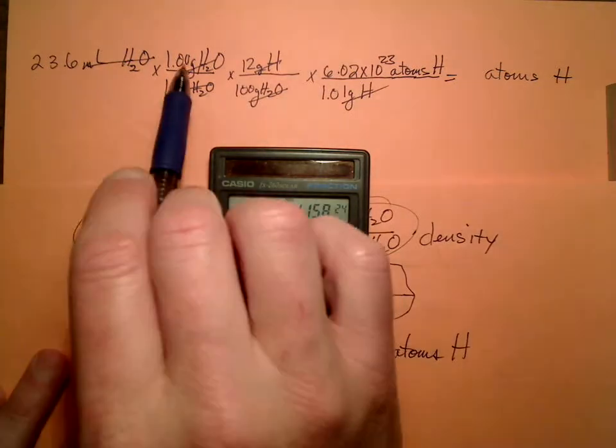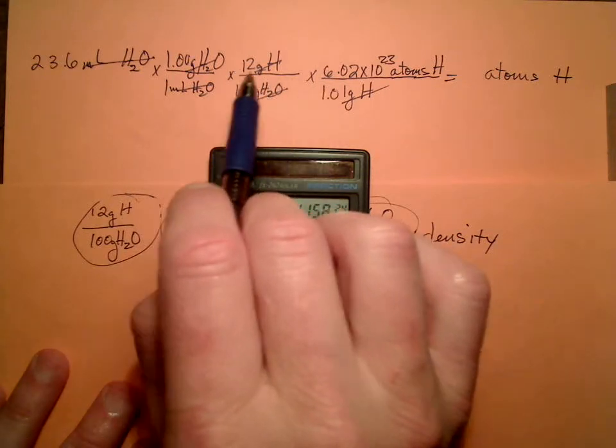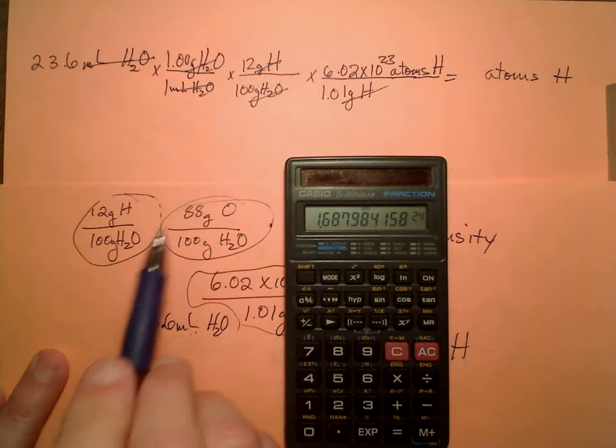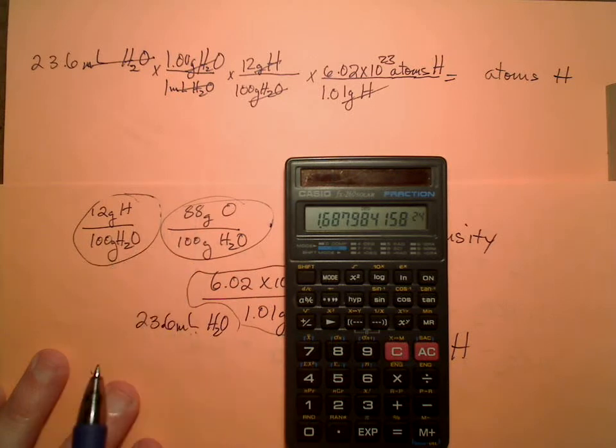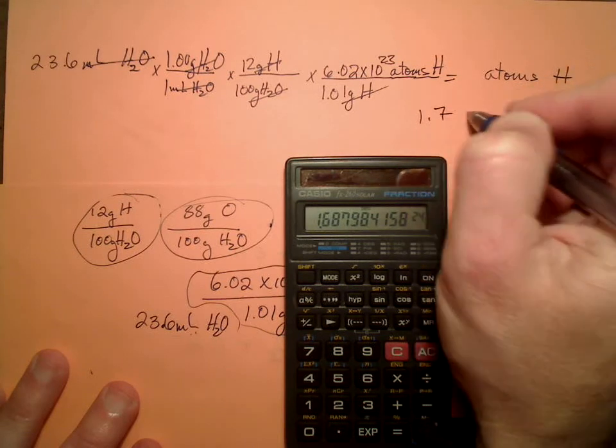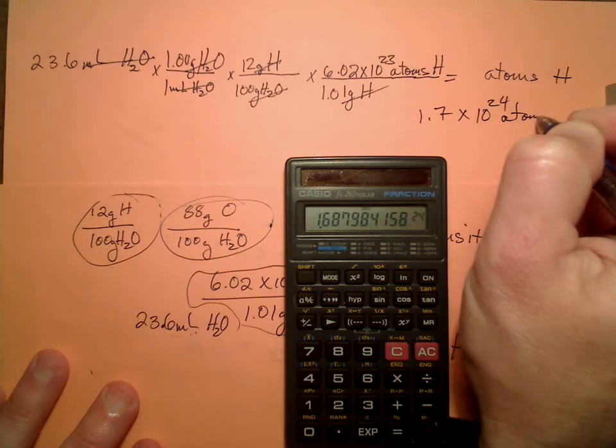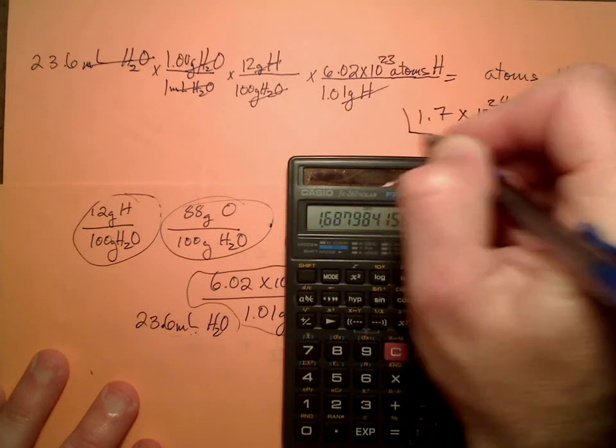Looks like I'm good to two significant figures because that percentage here is a measured value. So that's going to be 1.7 times 10 to the 24th atoms of H. Bingo.